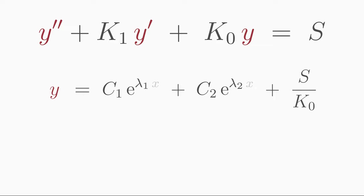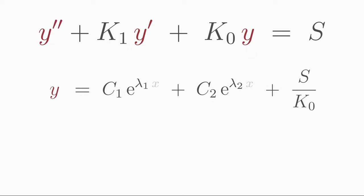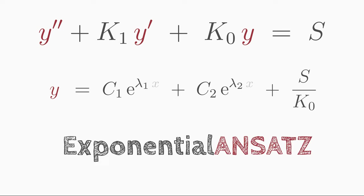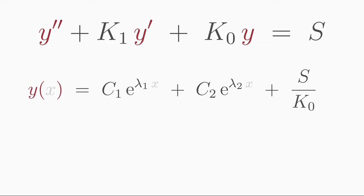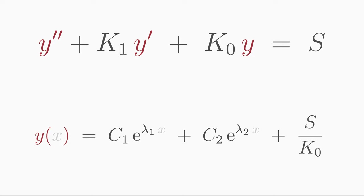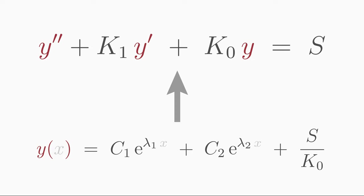The two unknown constants c1 and c2 are determined by the constraints. Also note that the exponential ansatz is a guess method — this is the case if the actual solution of the differential equation is not of exponential form. Therefore, if you use a solving method that contains the word 'ansatz' in its name, be sure to check your solution by substituting it back into the differential equation and verifying that both sides are equal.